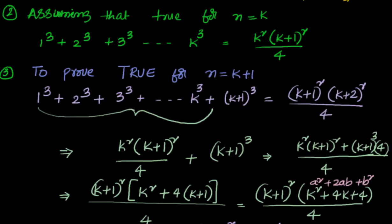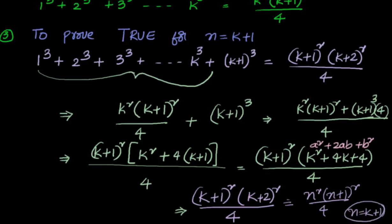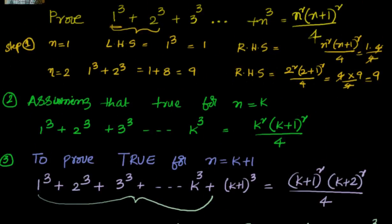Step 3: prove true for n=k+1. On the LHS, after the k terms we add the (k+1)th term. We substitute the k terms with the RHS value assumed in the hypothesis, then simplify to get n²(n+1)²/4 at n=k+1. This completes the proof that the statement is true for any value of n.